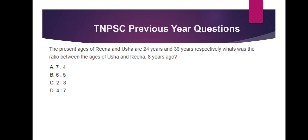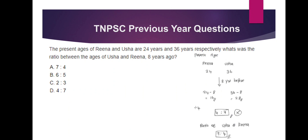The present ages of Rina and Usha are 24 and 36. What was the ratio between Usha and Rina 8 years ago? How do you solve this sum? You will find the two ages. Rina and Usha are 24 and 36. Eight years ago, Rina and Usha's ages give us the answer of 4 to 7.